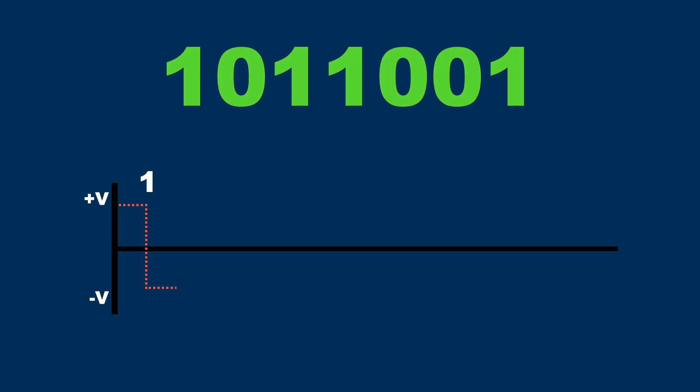The next bit is a 0, so now at the beginning of the bit time there is a transition to the positive voltage level. The signal stays there for half the bit time, and then switches to the negative voltage level for the rest of the bit time.